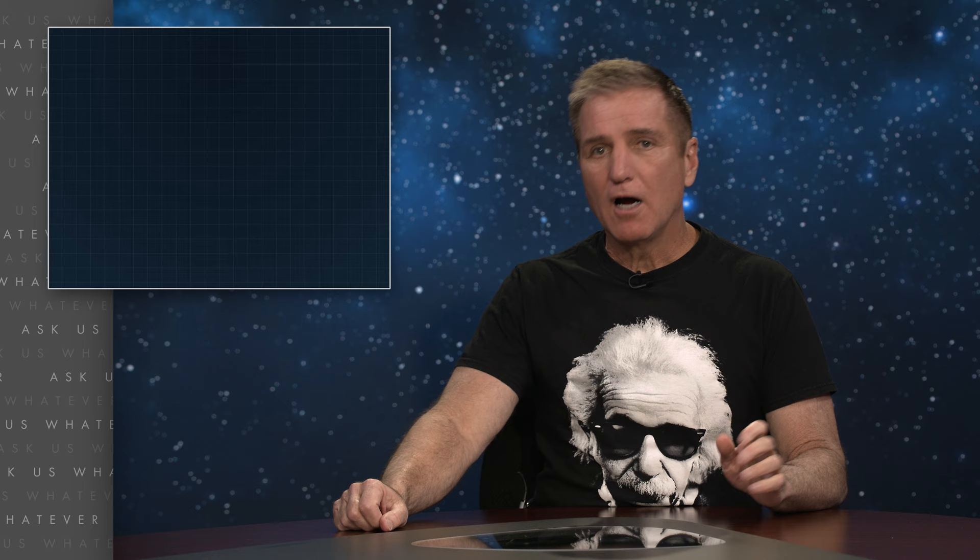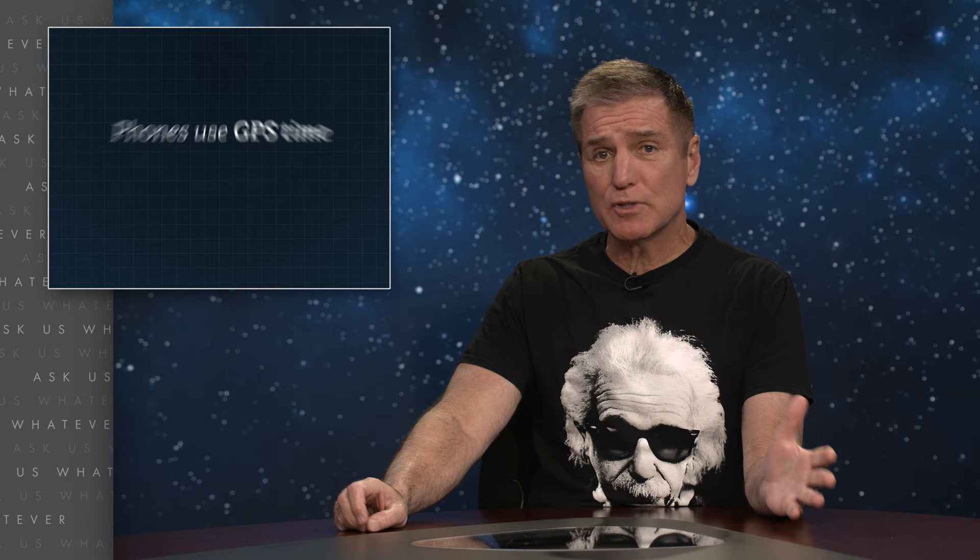Coordinated Universal Time, or UTC time, and GPS time are systems of standardized time on the Earth that do not include the offset created by Einstein's synchronization. Our cell phones use GPS time, which is basically UTC time without the leap seconds.